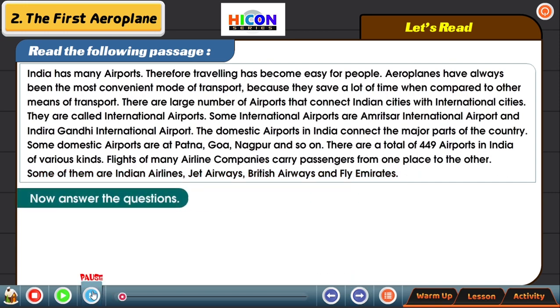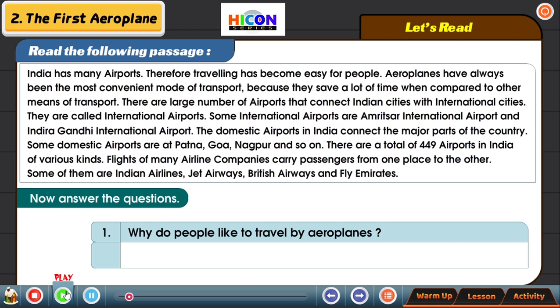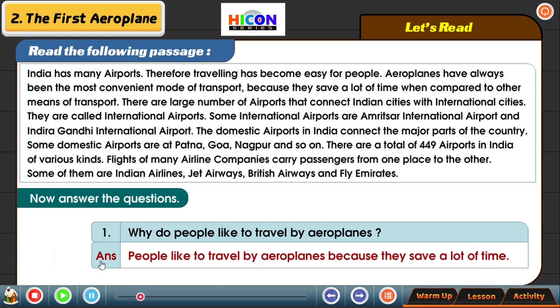Now we have got some questions from this passage which we need to answer. The first question: why do people like to travel by airplanes? People like to travel by airplanes because they save a lot of time. It's the fastest mode of transportation, that is why most people prefer air transportation over other modes.